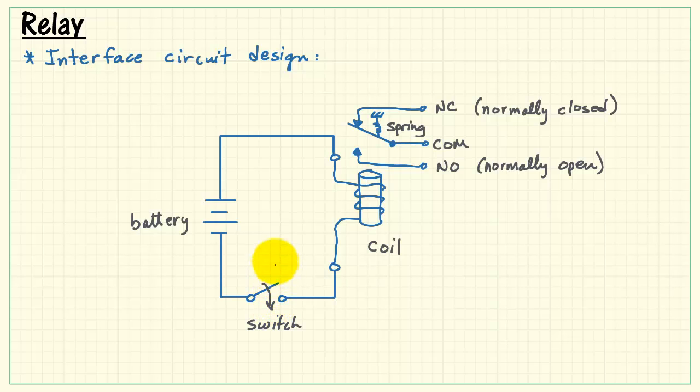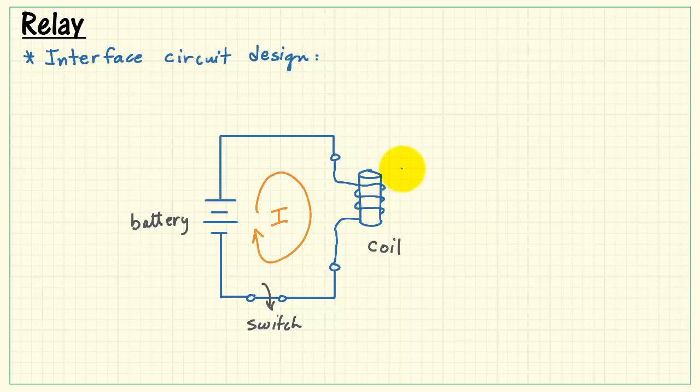When the switch is closed, we provide a path for current to flow, and the battery provides the power for current to circulate in that circuit.